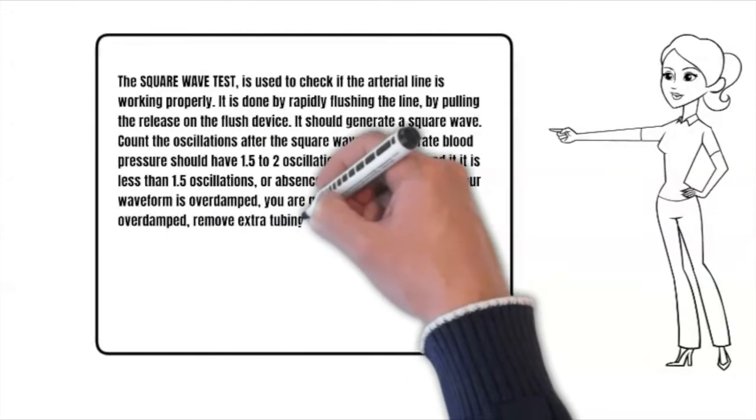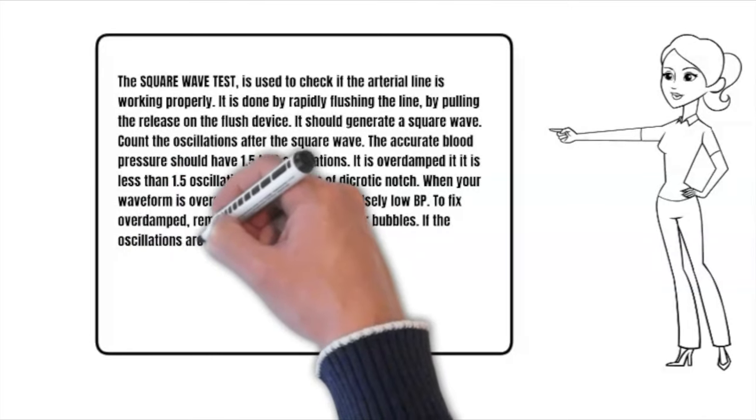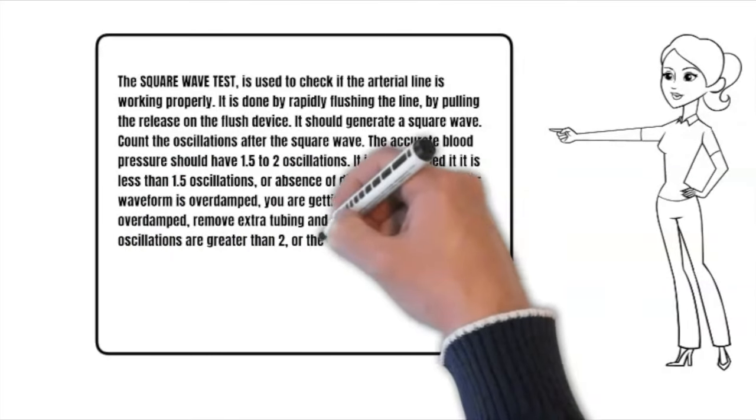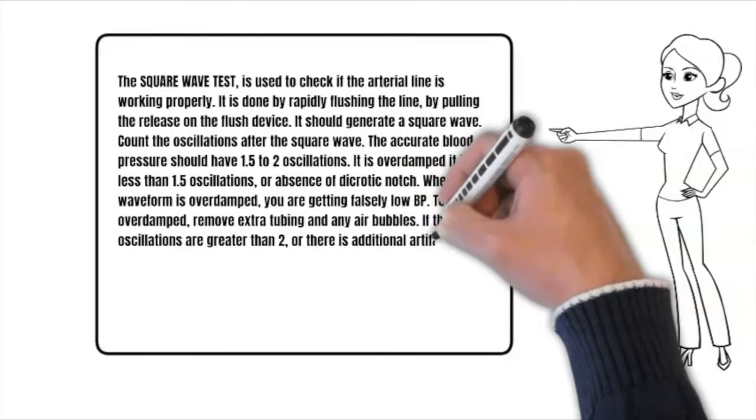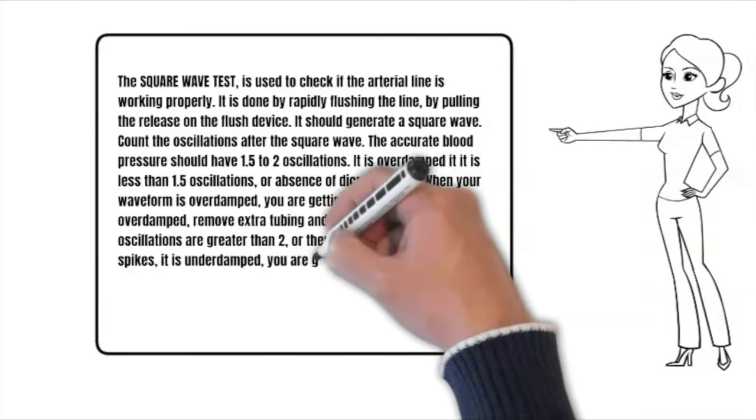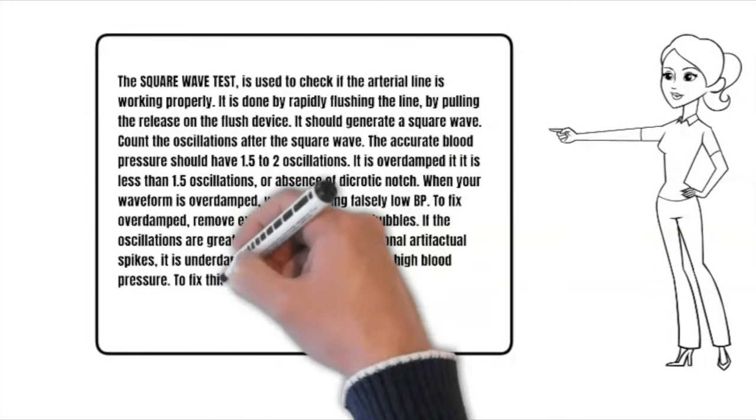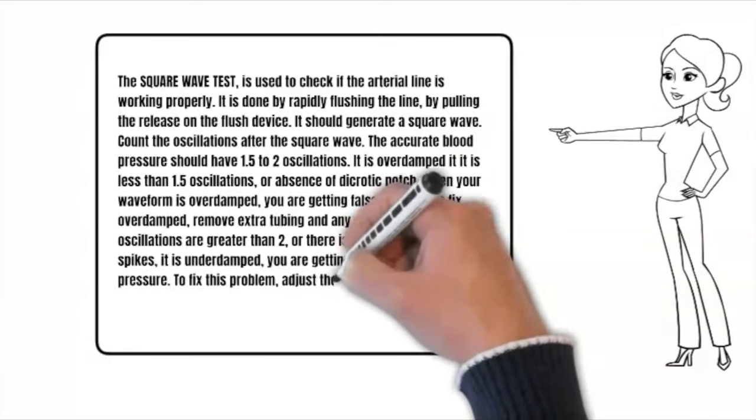Check the oscillations. If the oscillations are greater than 2 or there are additional artifactual spikes, it is underdamped. You are getting falsely high blood pressure. To fix this problem, adjust the filter settings of the monitor.